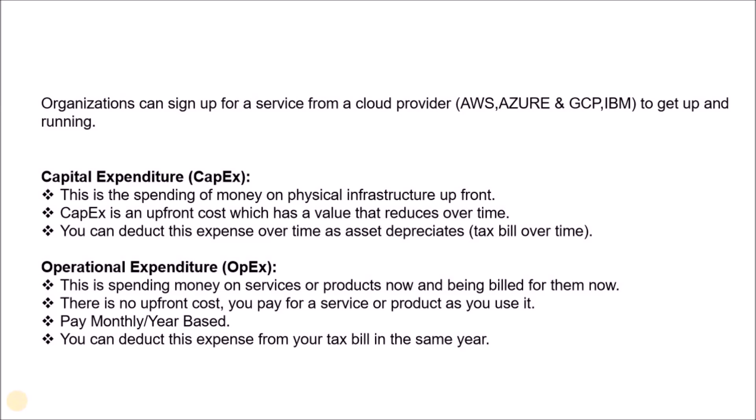Operational expenditure is spending money on a service or product now and being billed for it now. For example, if you use a virtual machine for one hour, a bill is generated for that one hour in your monthly or yearly bill, depending on the cloud vendor. There is no upfront required — you pay for a service as you use it. You can also deduct these expenses for tax billing in the same year you spend them.